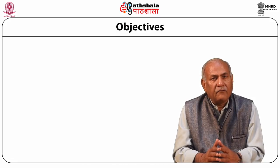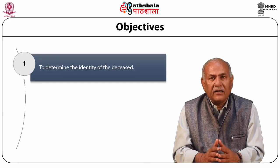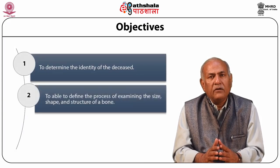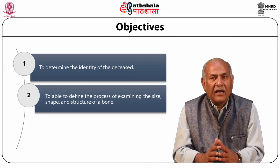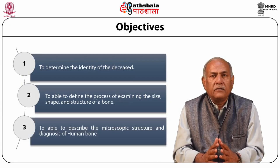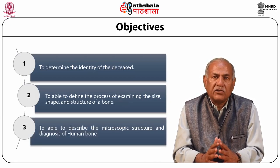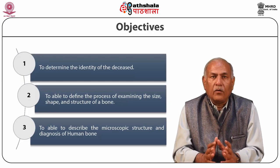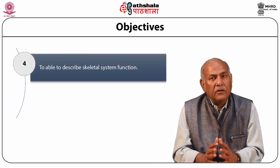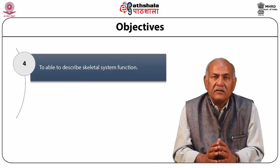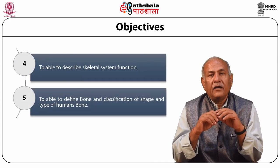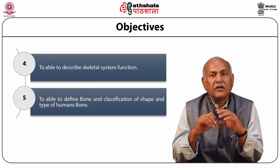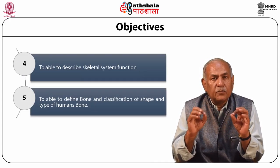The learning objectives are: first, to determine the identity of the deceased; second, to be able to define the process of examining the size, shape, and structure of a bone; third, to describe the macroscopic structure and diagnosis of human bone; fourth, to describe skeletal system function; and fifth, to define bone and the classification of shape and type of human bones.